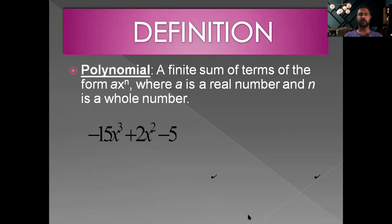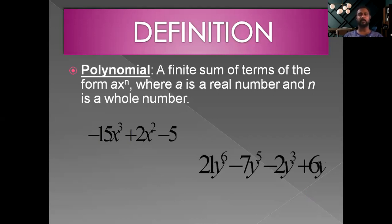Let us see one more example: 21y to the power 6, minus 7y to the power 5, minus 2y cube, plus 6y. The respective powers of the variable are 6, 5, 3, and 1. All are whole numbers, therefore this is again an example of a polynomial.